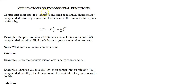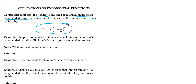The first application we want to take a look at is compound interest. We have a formula for compound interest: if you have P dollars invested into an account paying an annual interest rate r compounded n times per year, then the balance after t years is P times (1 + r/n) raised to the n times t power.